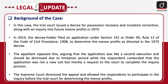Background of the case: The trial court issued a decree for possession recovery and mutation correction, along with an inquiry into future mean profits, in 1973. In 2014, the decree holder filed an application under Section 141 of Order 20 Rule 12 of the Code of Civil Procedure to determine the mean profits as directed in the 1973 decree.